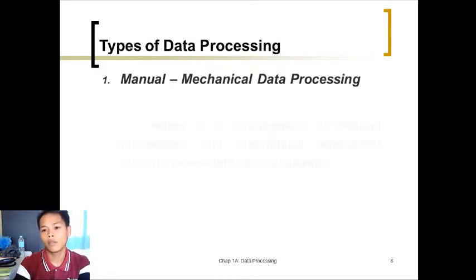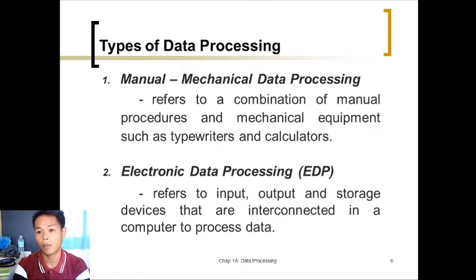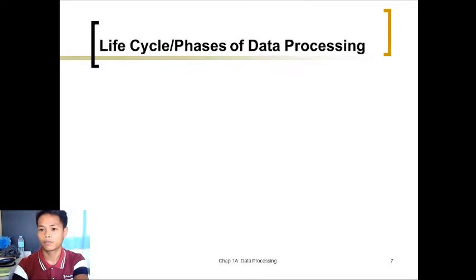Types of data processing: There are two types. First is manual mechanical data processing, which refers to a combination of manual procedures and mechanical equipment such as typewriters. Electronic data processing (EDP) refers to input, output, and storage devices that are interconnected in a computer to process data. EDP uses electricity.